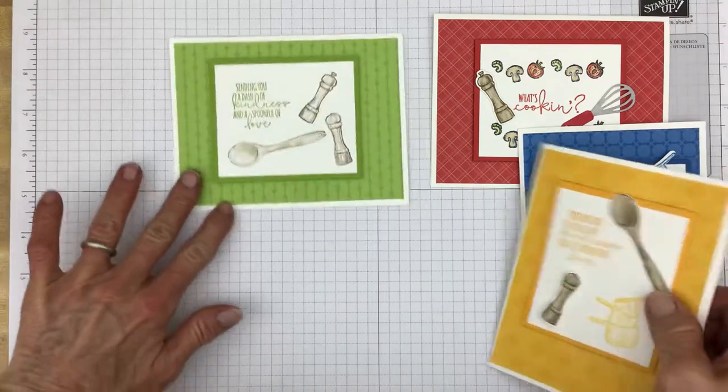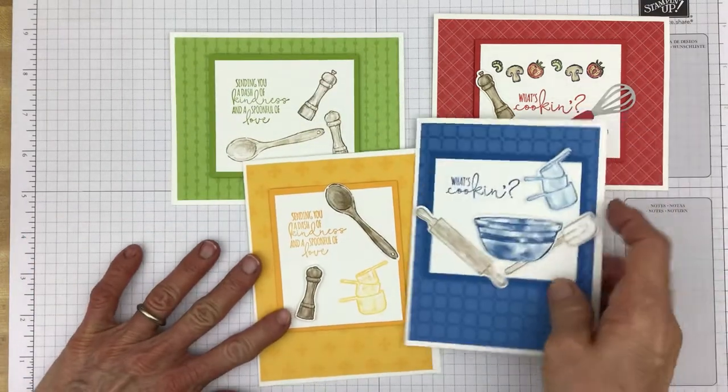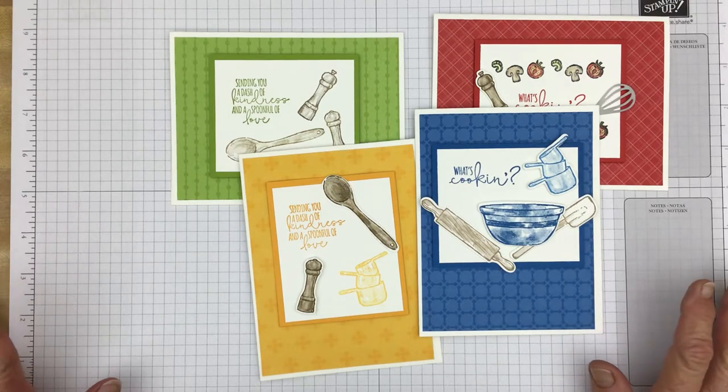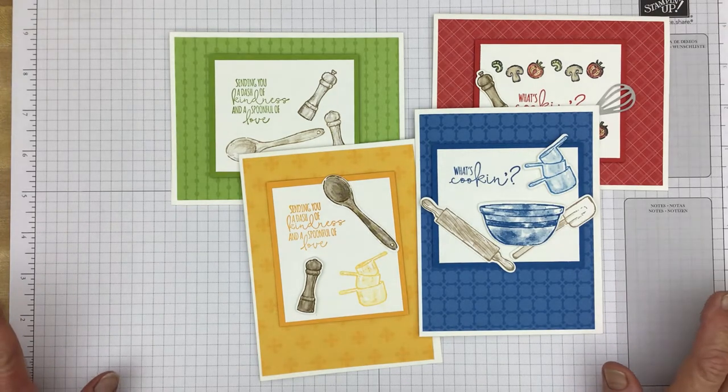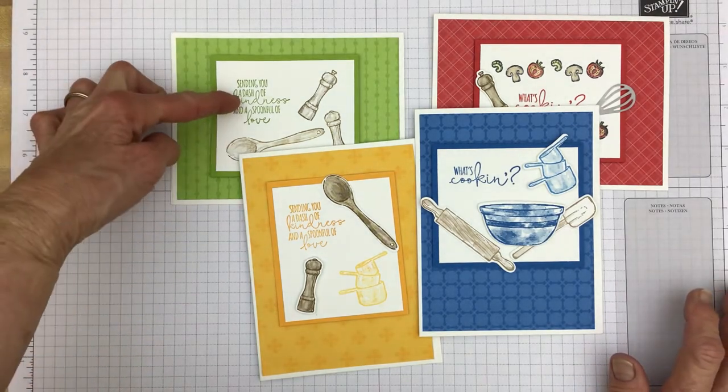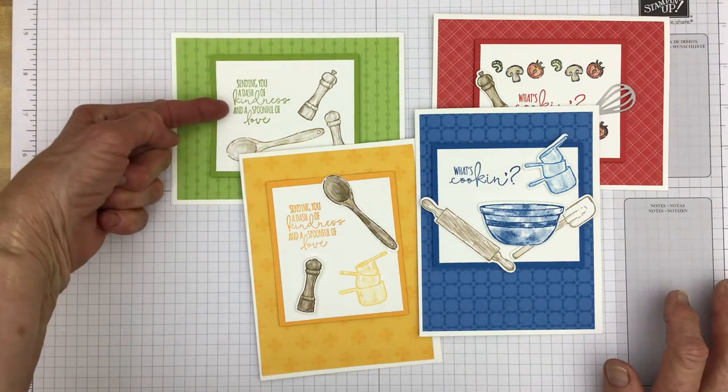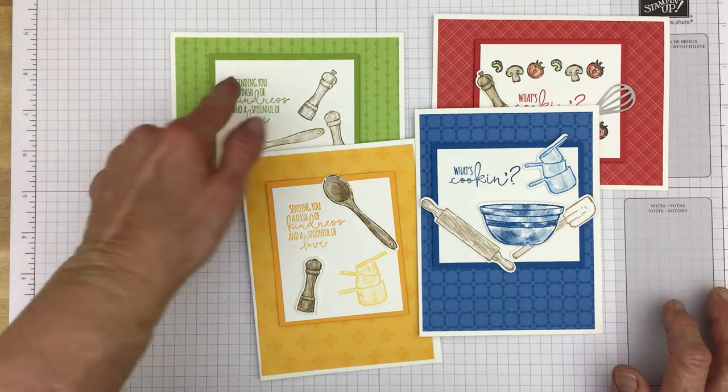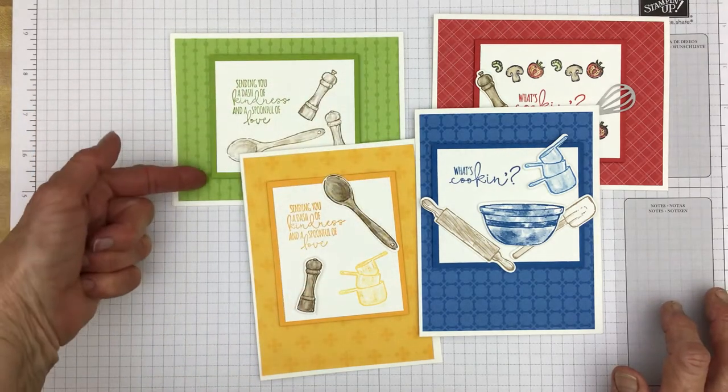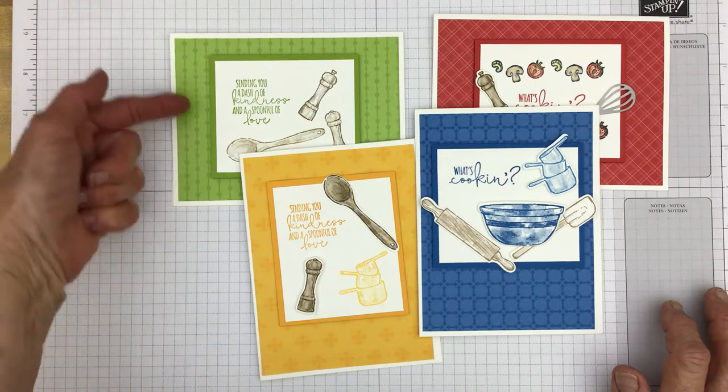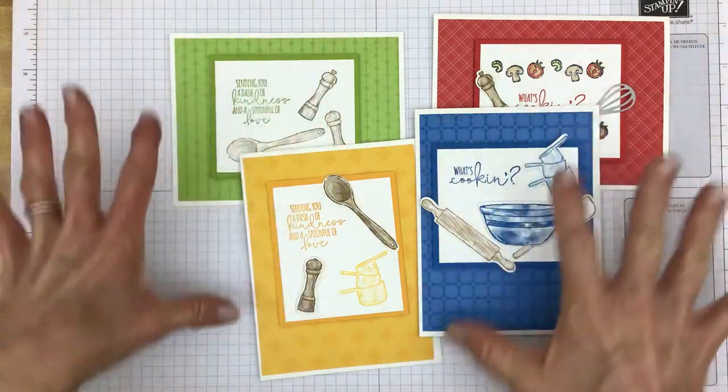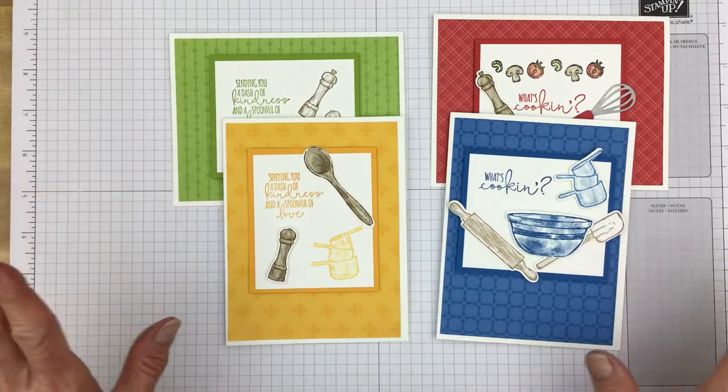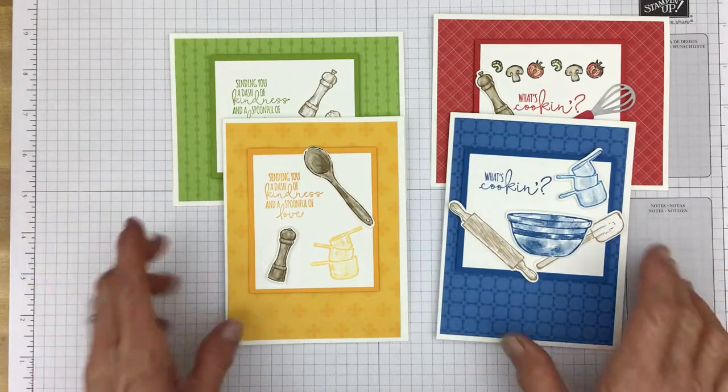And then the card we're making today is simply stamped. And the thing all these cards have in common other than being made with the same stamp set is I used the exact same card layout. And it's a really simple card layout. The basic white measures two and three quarters by three and a quarter. And then it has a mat that measures three by three and a half. Each of them has the exact same layout done just maybe slightly different.